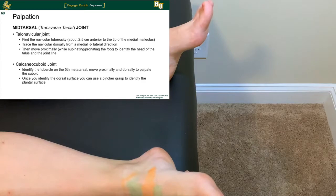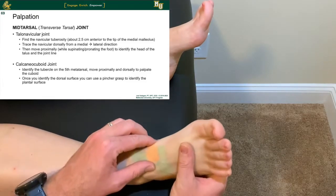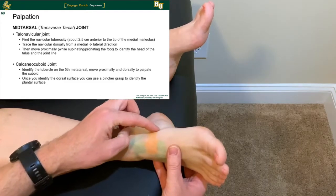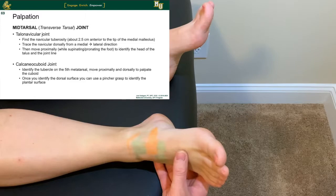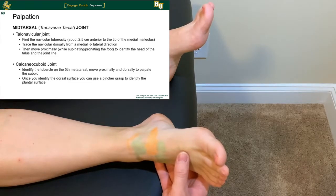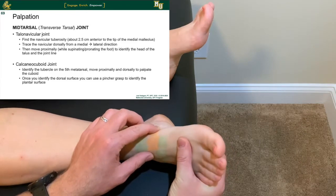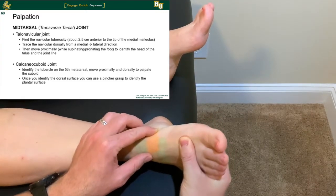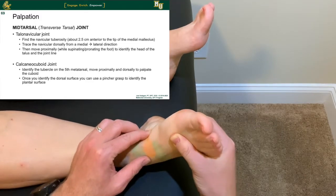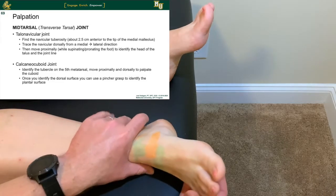Moving into the mid-tarsal joints, we find the talonavicular joint. Find the navicular tuberosity — the most prominently bony point at the high point or apex of the arch. You can trace the navicular dorsally in a medial-to-lateral direction. You can also move proximally while taking the foot into supination and pronation to identify the head of the talus at the joint line. Keep your hand on the navicular tuberosity and take the foot through pronation and supination to feel how those joints articulate.